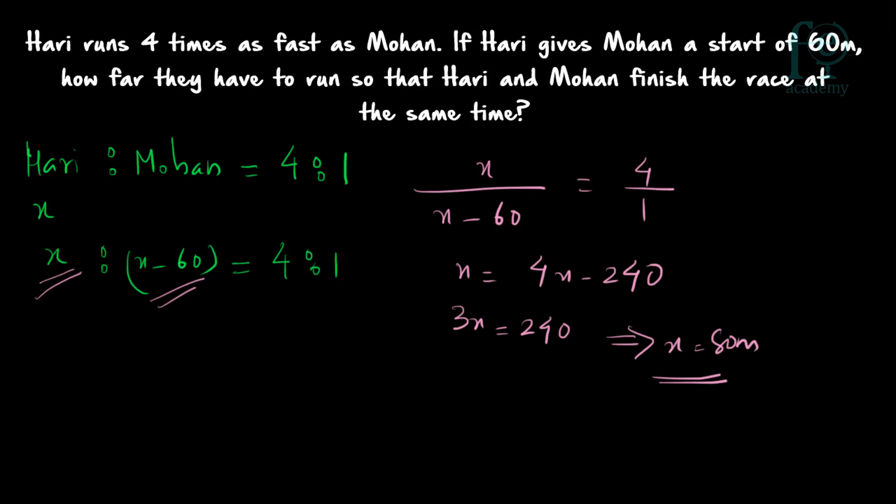So in an 80 meter race, both Hadi and Mohan will be reaching the finish line at the same time. Their ratio of speeds is 4 is to 1, which we convert to a distance ratio of 4 is to 1. Since they are reaching at the same time, we equate x to x minus 60 equal to 4 to 1 and find x equals 80 meters. Thank you for watching.